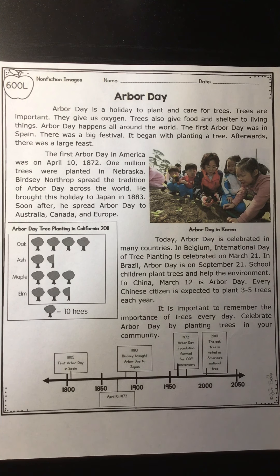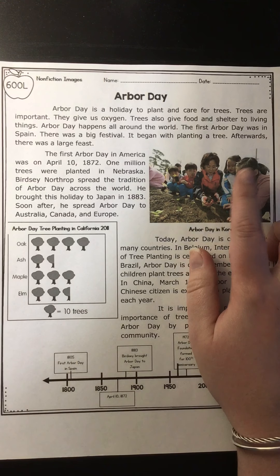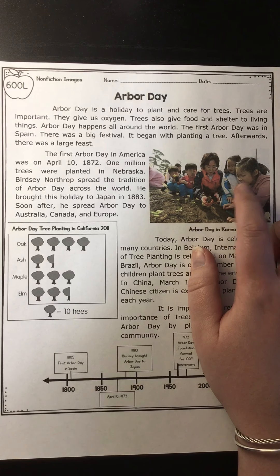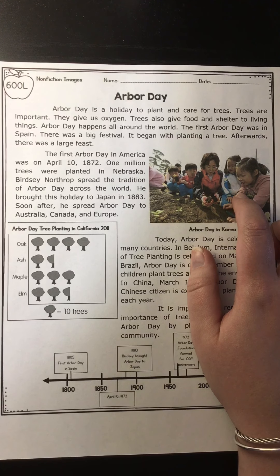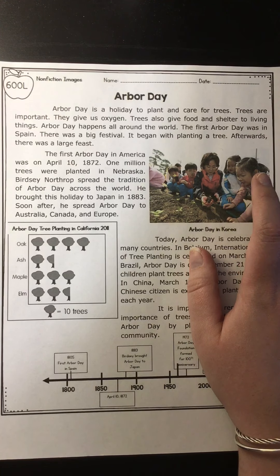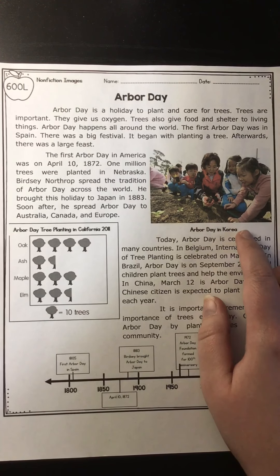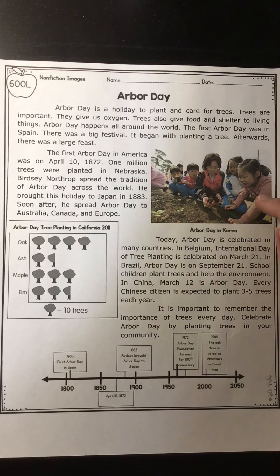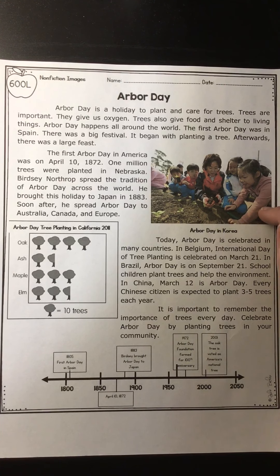Wow, I learned so many great facts about Arbor Day that I didn't even know. So now I am going to go through and look at all of my nonfiction text features in this article. The very first one that catches my eye — what is this nonfiction text feature called? This is a photograph. A lot of the time when you see a photograph in a nonfiction text passage, you are also going to see a caption. This caption says Arbor Day in Korea, which tells me that this photograph was taken in Korea on Arbor Day.